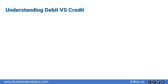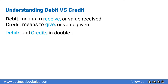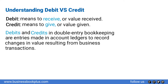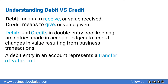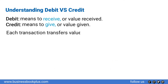Understanding debit versus credit: debit means to receive, or value received. Credit means to give, or value given. Debits and credits in double-entry bookkeeping are entries made in account ledgers to record changes in value resulting from business transactions. A debit entry in an account represents a transfer of value to that account, and a credit entry represents a transfer of value from the account.